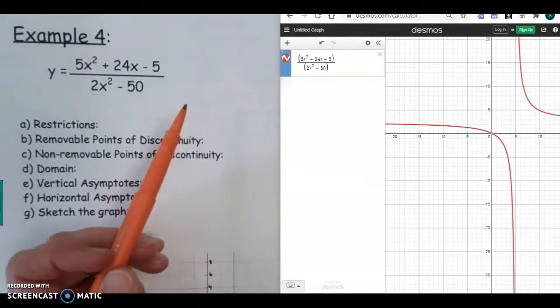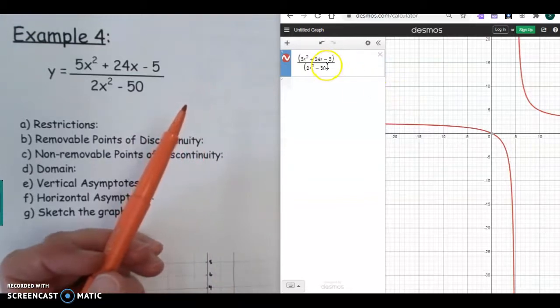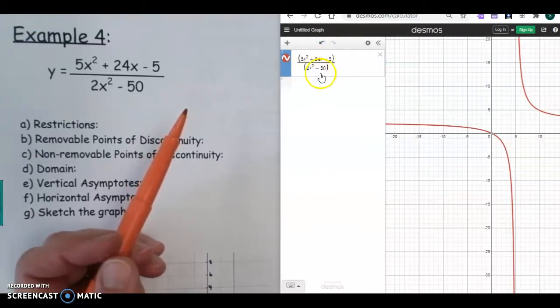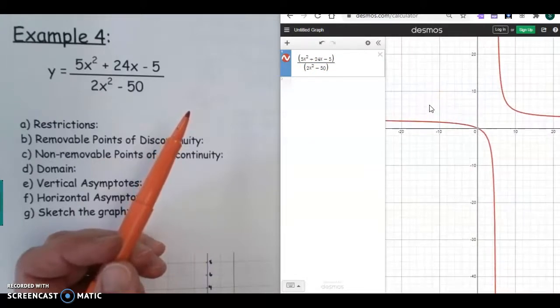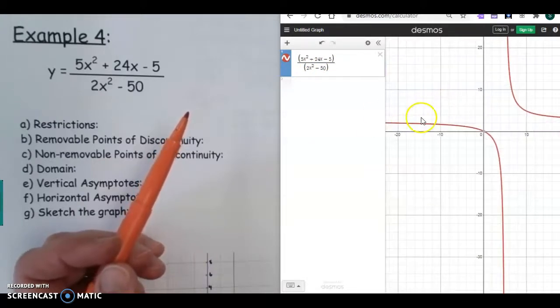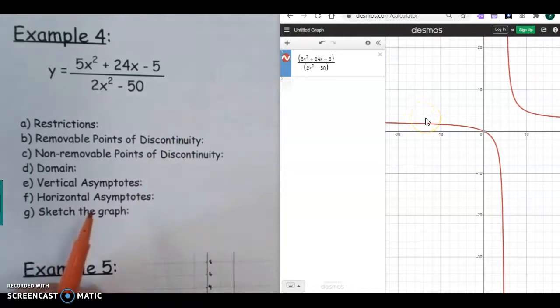So if you notice, whenever I keyed it in Desmos, because of it being a fraction, I put the numerator in parentheses, hit the division bar, and then I keyed in the denominator. So this is what the graph of a rational function looks like. And then like I said, we'll come back to this after we solve this algebraically.